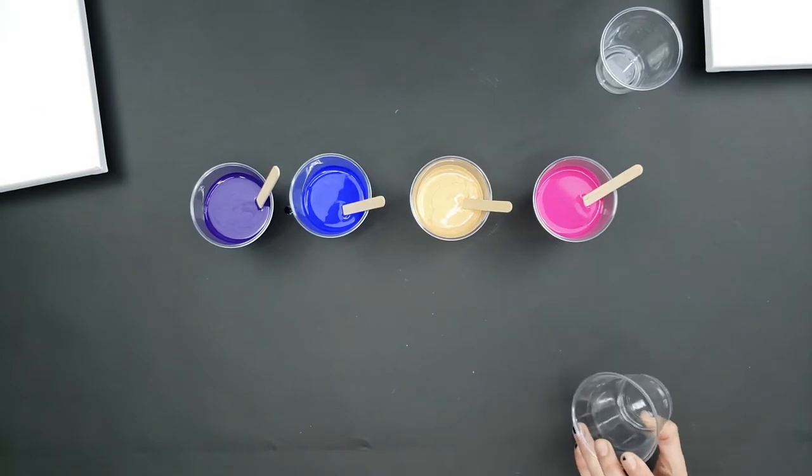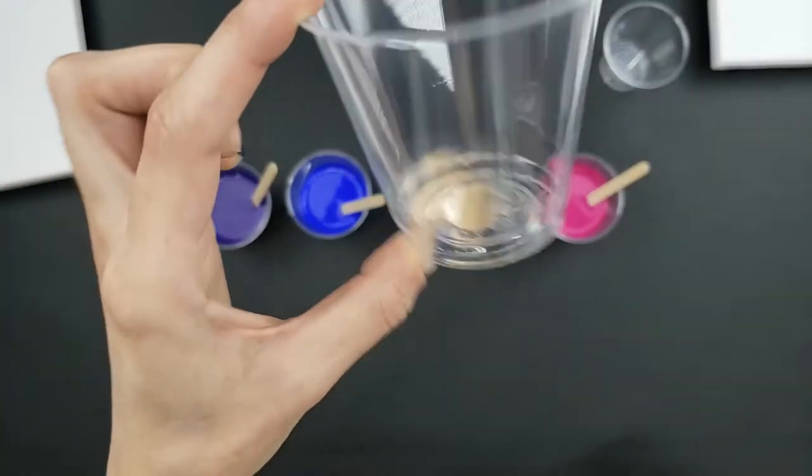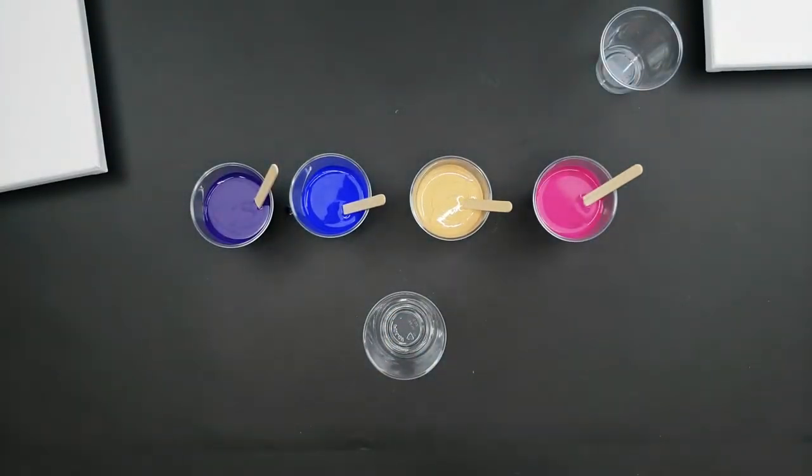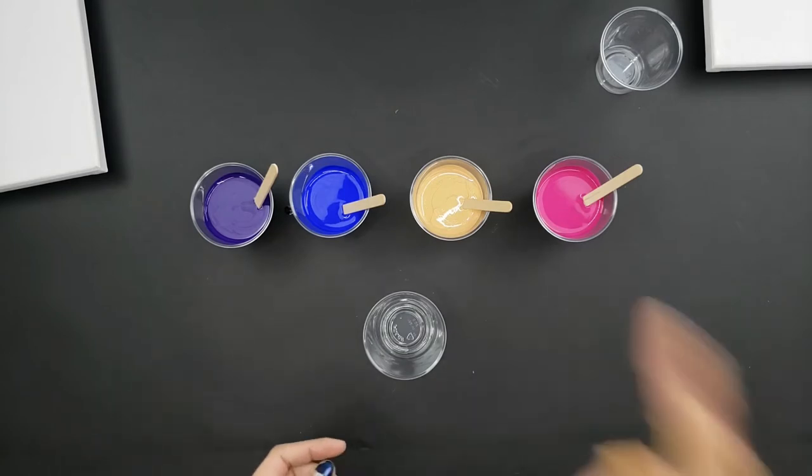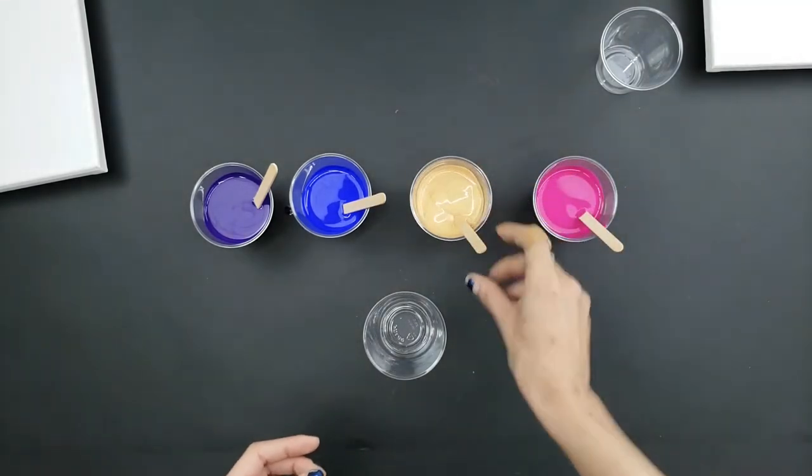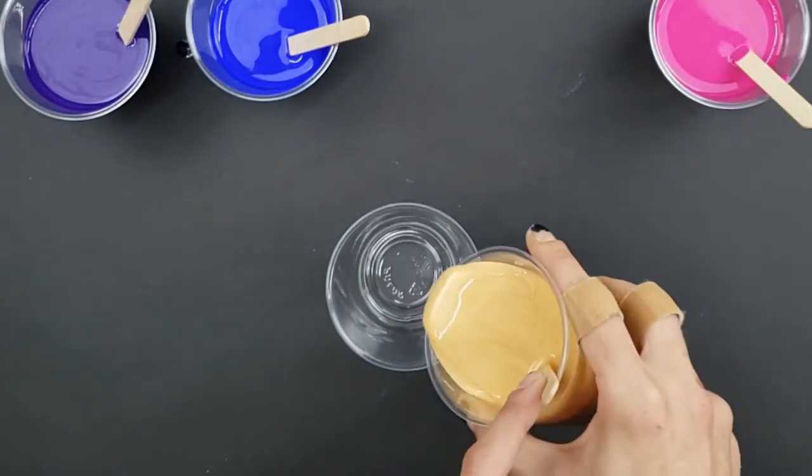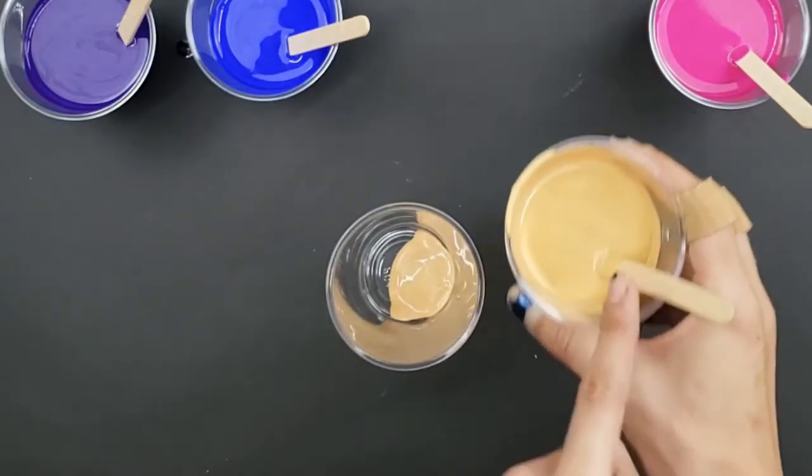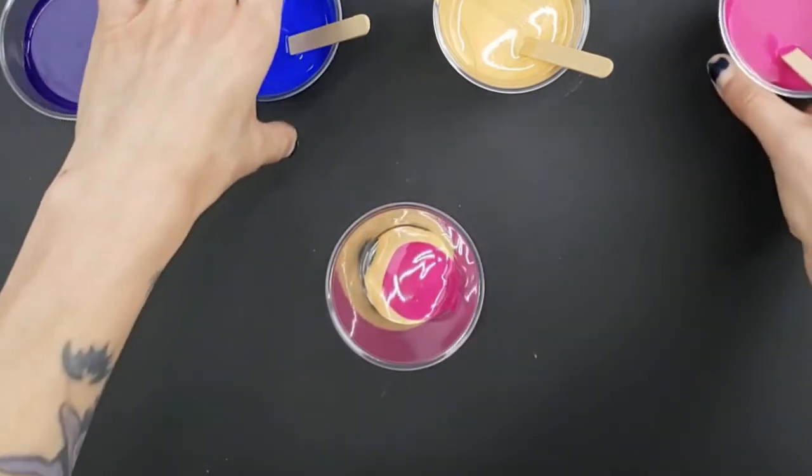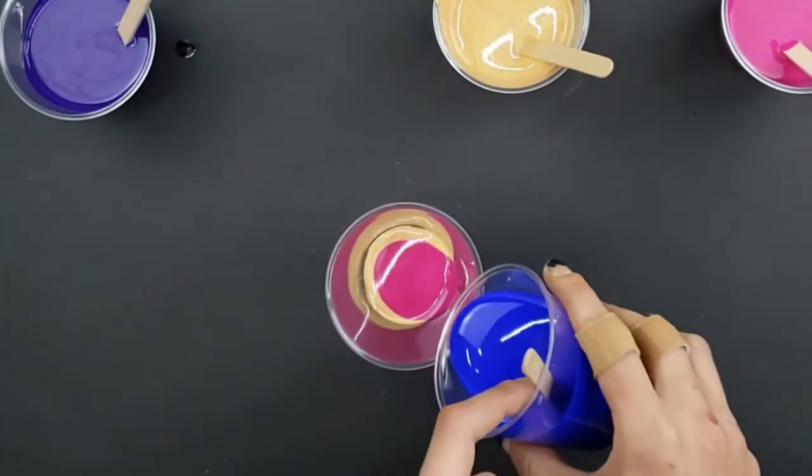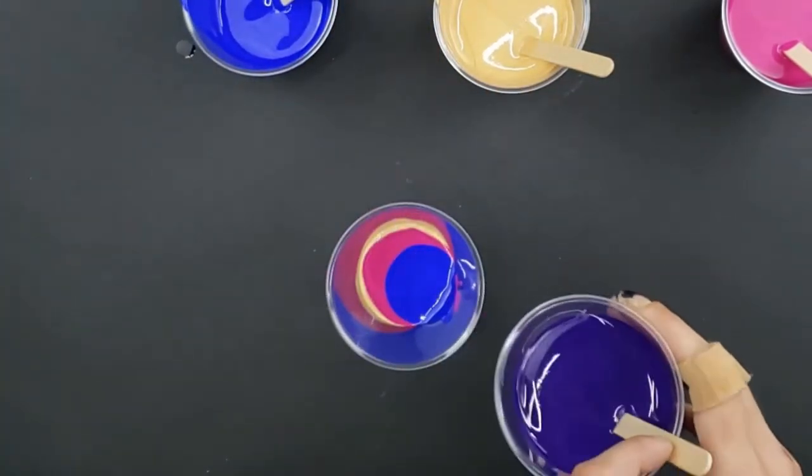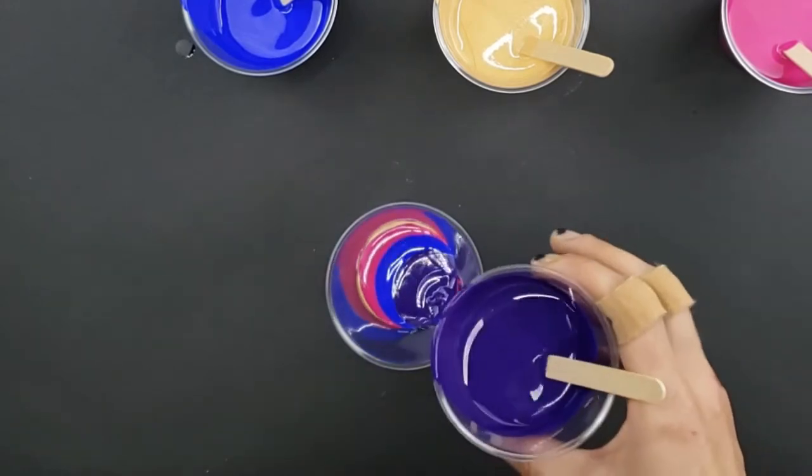So I'm going to start layering these with pours. It's important to remember that the first color you put in is the last color to come out, so I'm going to put gold as the base. I got the smaller cups so I could actually realize how much paint I'm using, because 8 by 10s don't really need that much paint. I don't want to waste it as much as I can.